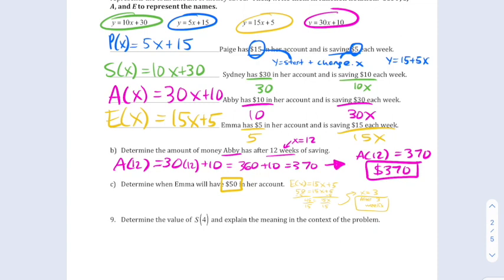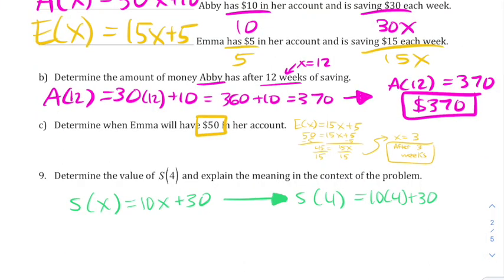Next, they ask us to determine the value of s of 4 and explain the meaning in the context of the problem. Well, s of 4 means that we're going to plug 4 as the input into the s function. So we have s of x equals 10x plus 30, and we're going to replace the x's with 4. And now we're just going to simplify the right side. 40 plus 30, which equals 70. So s of 4 equals 70,